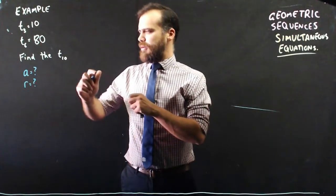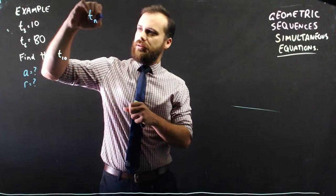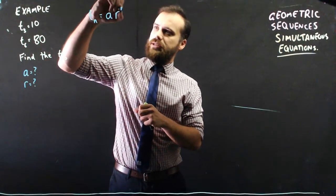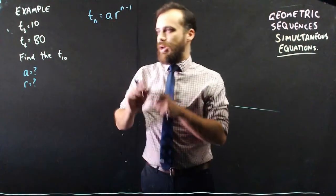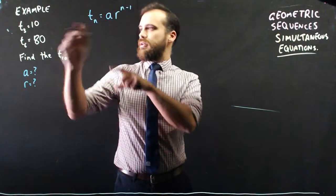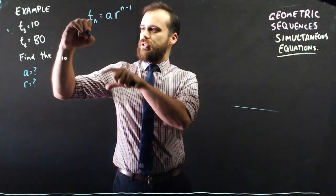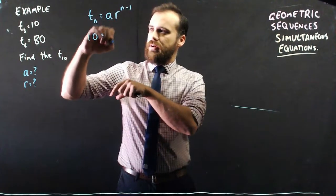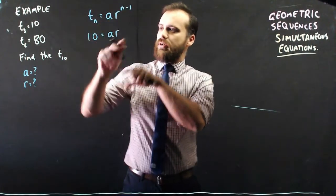We know that term n equals a times r to the n minus 1, and we have term 3 is equal to 10. So we know that term 3 is 10, but we don't know what a is, we don't know what r is.